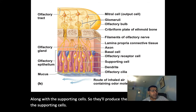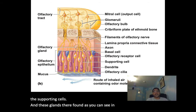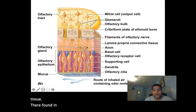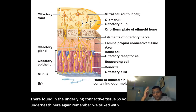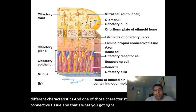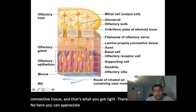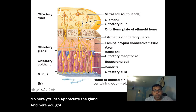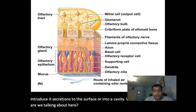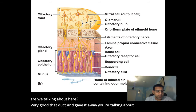These glands are found in the underlying connective tissue. Remember, epithelia is supported by connective tissue. You can appreciate the gland and the duct of the gland, which allows it to introduce its secretions to the surface or into a cavity — making these exocrine glands.